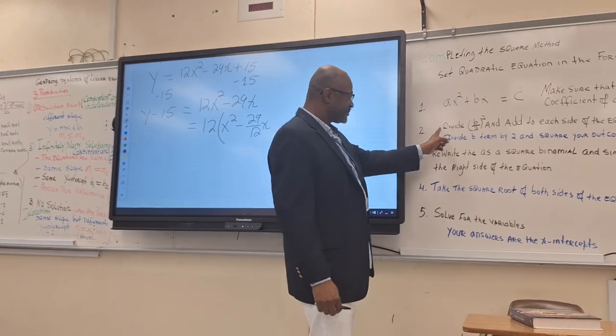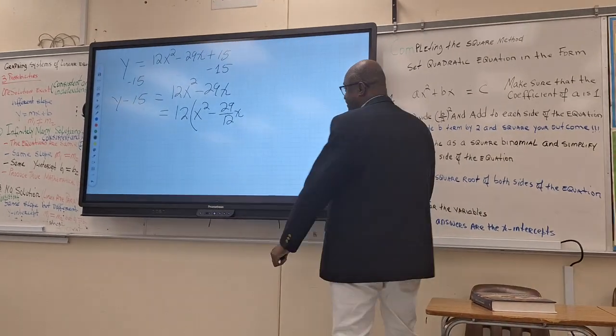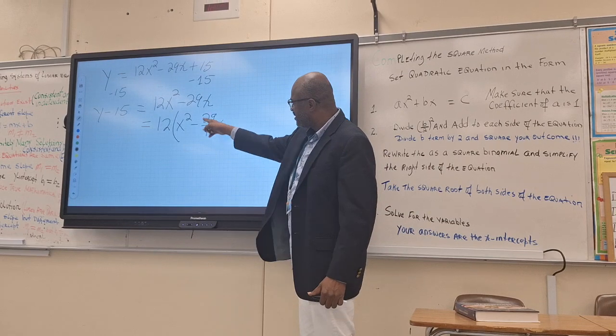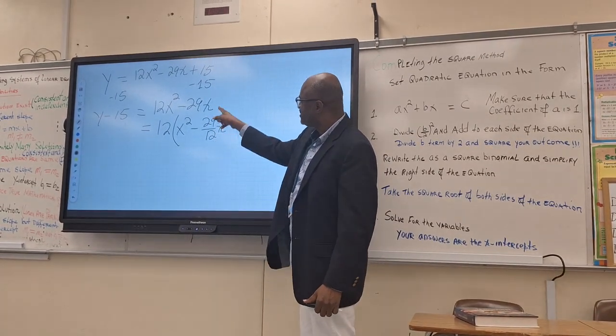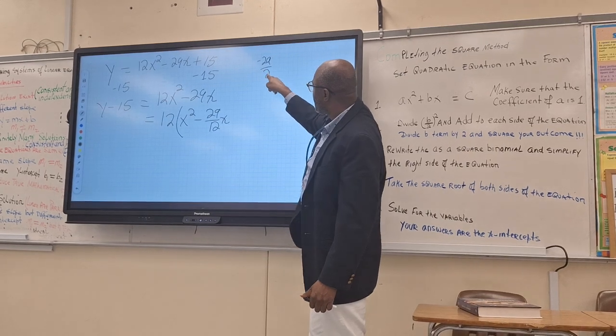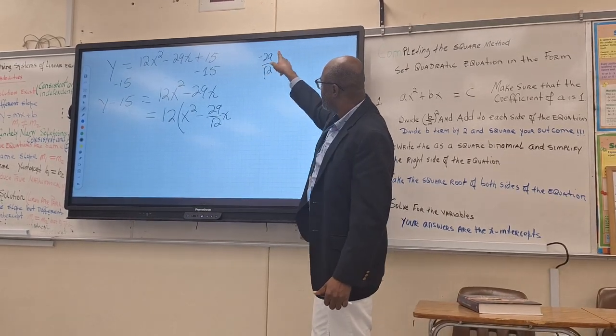So we can come back here. So you guys need to pay attention. This is your b term. You got it 29 over 12. This is the fraction. You will take that. And this always divide by what? 2. By 2.